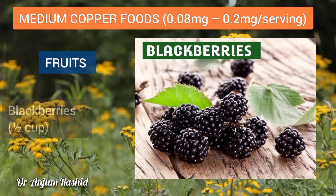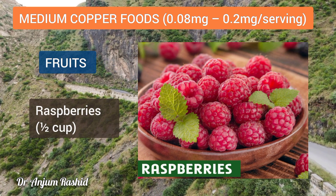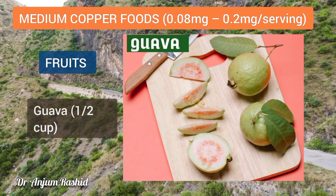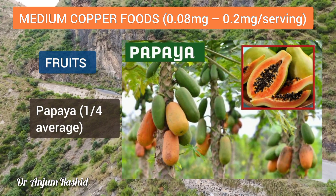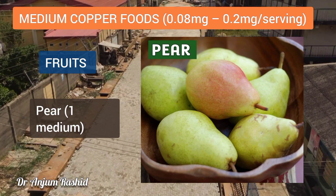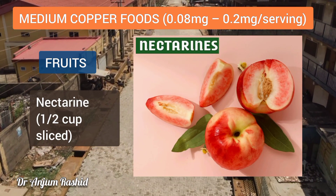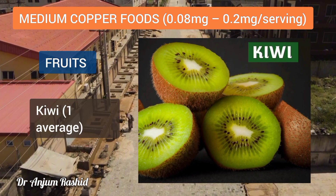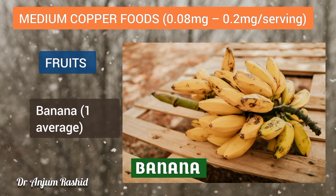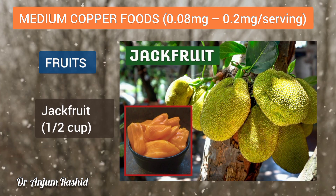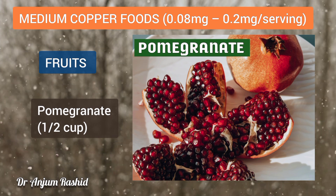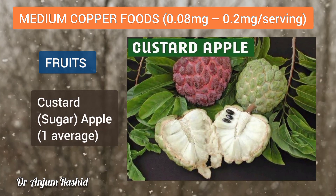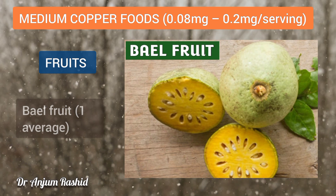Medium copper fruits include mango (1 cup), pineapple (1 cup), blackberries (1 cup), apricot (½ cup sliced), kiwi (one average size), banana (one average size), jackfruit (½ cup), pomegranate (½ cup), fresh fig (one average), lychee (one average size), custard apple (one average), bale fruit (one average size), and olives (two medium).